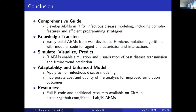In summary, we developed ABMR for infectious disease modeling, including complex features and efficient programming strategies. We built our ABM based on a well-developed micro-simulation algorithm with modular code for agents' characteristics and interactions. Our framework enables simulation and visualization of past disease transmission and future trend prediction. It can also be applied to non-infectious disease modeling and can incorporate cost and quality-of-life analysis for improved simulation outcomes. Full R code and additional resources are available on GitHub. The manuscript for the tutorial and workshop is still in progress and will provide a more comprehensive introduction to our work.